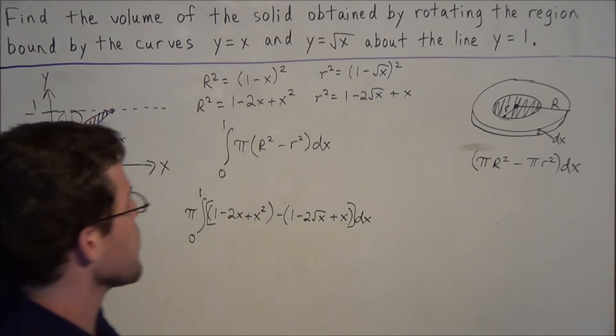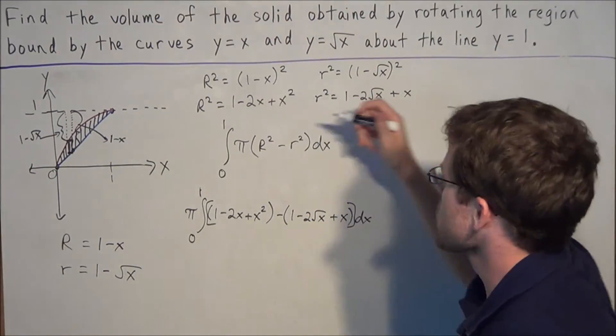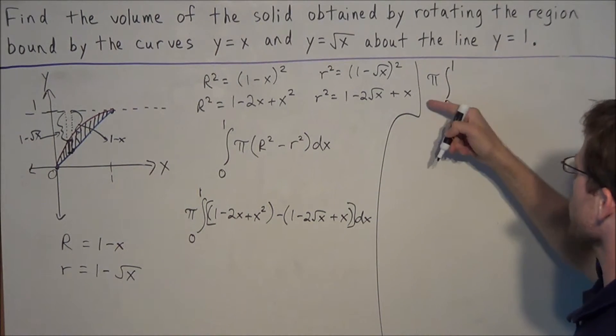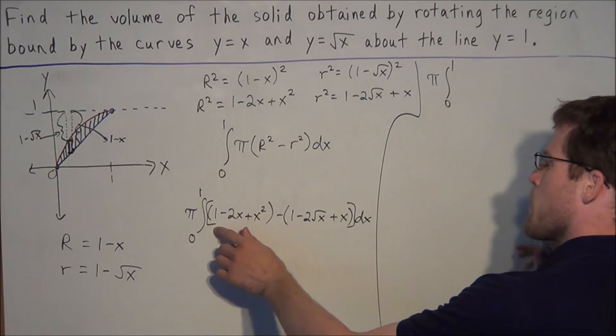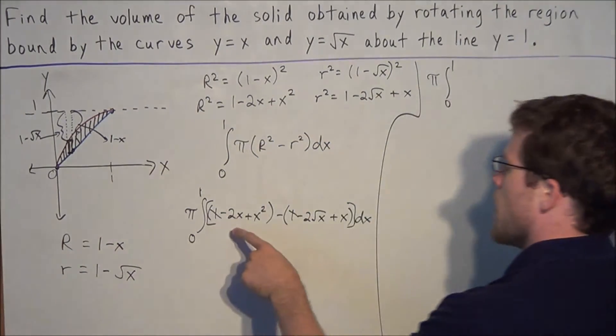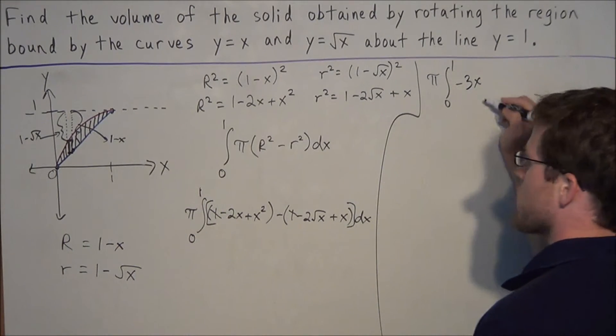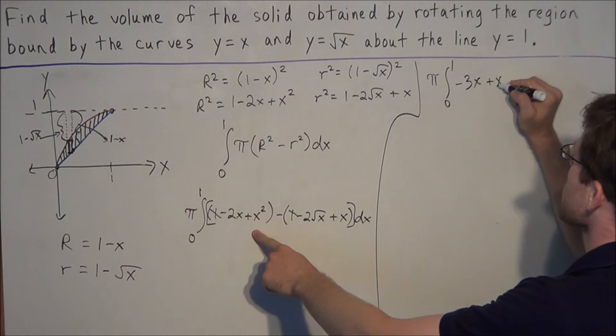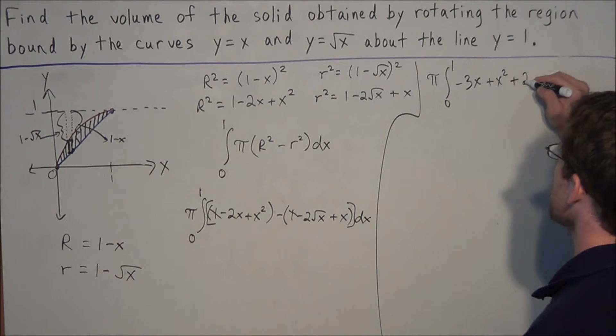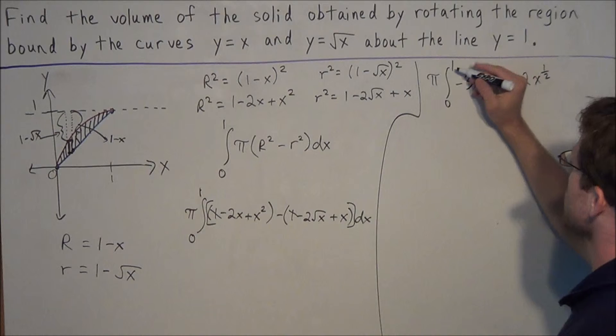So for the next line, we just have to simplify this polynomial expression here. We have the integral from 0 to 1, we have our π outside. And now I'll do this relatively quick, but we have 1 minus 1, those will cancel. Now we have negative 2x minus positive x. We can combine like terms. Negative 2x minus positive x is negative 3x. We have positive x squared. And we have a negative negative 2 radical x, which comes out to a positive 2 radical x. But we'll write it as 2x to the 1 half, because when it comes to taking the anti-derivative, it helps to have numerical exponents. And remember, this is all dx we have on the outside, that aspect is crucial.